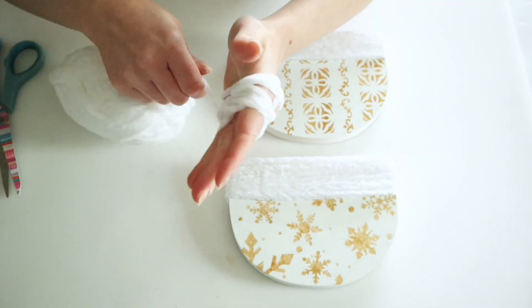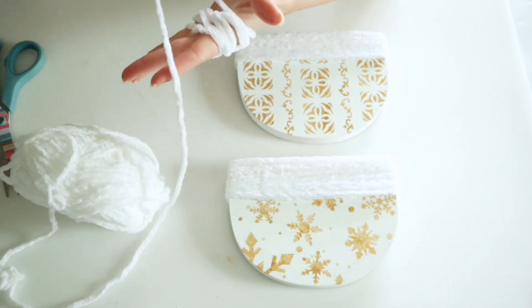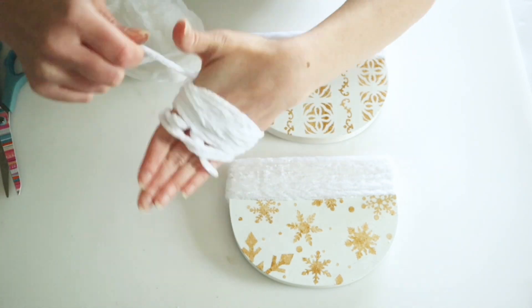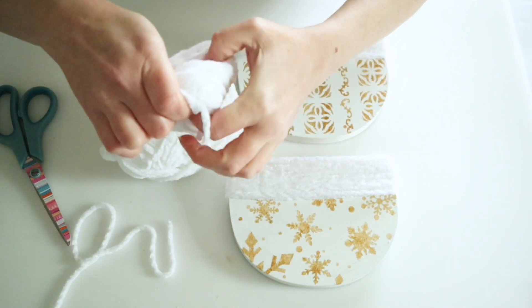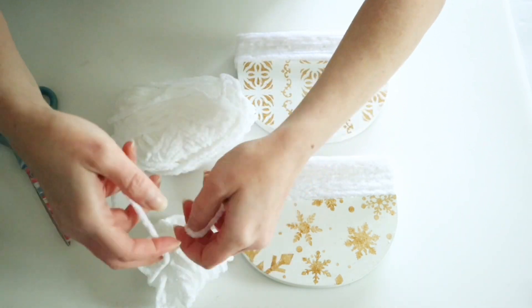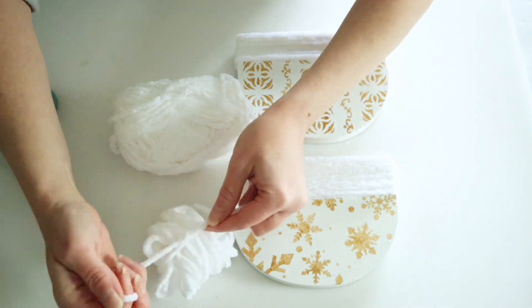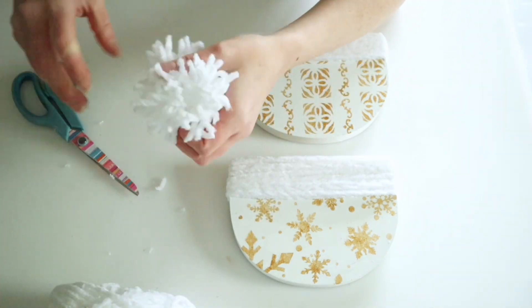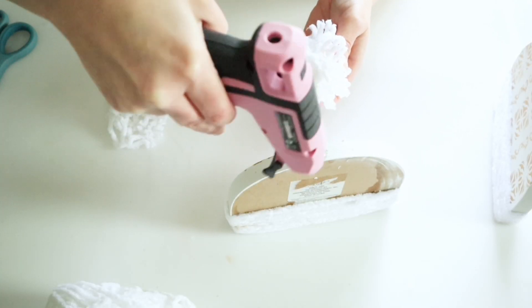Then for the tops of these hats, I wanted to make some pom-poms so I am using that same Chenille yarn and I'm just making some really fluffy pom-poms for the tops of these hats. Then all I had left to do was just trim these down and hot glue those to the top and here's how they turned out.